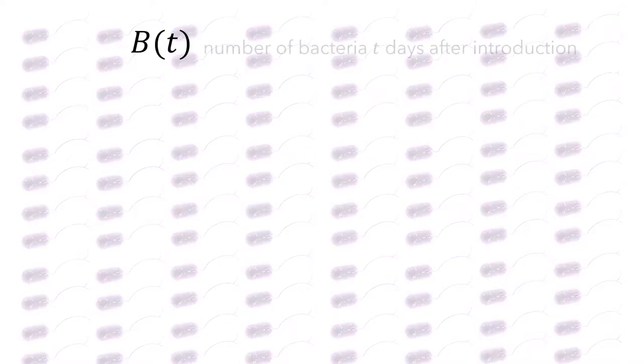We'll start by thinking about the growth of bacteria. Suppose you start off with a bacterium, and then it reproduces, and then each of these reproduce, and each of those reproduce, and again, and again. In this scenario, the number of bacteria grows more rapidly when there are more bacteria present. We'll write b to represent the number of bacteria t days after they are introduced into the environment.